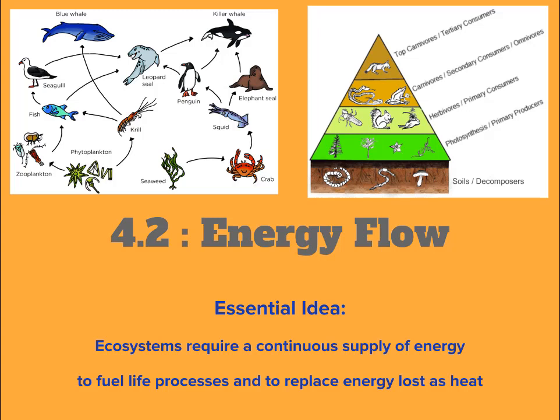We learned about species, populations, communities, and ecosystems. We also learned about how ecosystems can be studied on a small scale by creating a mesocosm, and how the relationships organisms have in an ecosystem can be studied by doing a chi-squared analysis. That is our background knowledge as we move on to 4.2, which is about the flow of energy through the ecosystem.